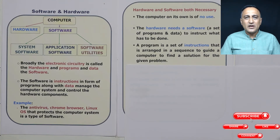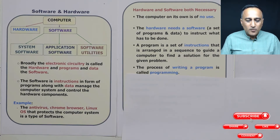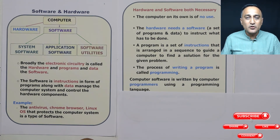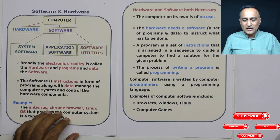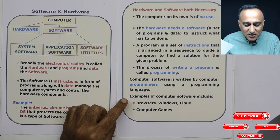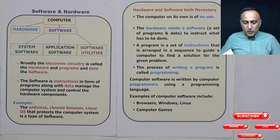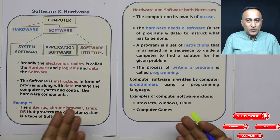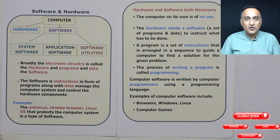A simple instruction could be 'sum is a plus b' — that is an example of an instruction. But the entire set of instructions to get the sum of two numbers constitutes a program. You could write a program in C, C++, Java, whichever language you are comfortable with. The process of writing a program is called programming, and the person who writes it is referred to as a programmer. Examples of computer software include MS Windows and Linux, which are a special kind of software called an operating system — we will have an entire video lecture on them.